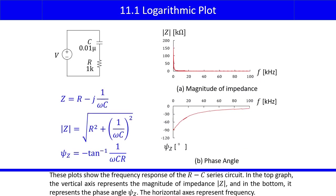These plots show the frequency response of the RC series circuit. In the top graph, the vertical axis represents the magnitude of impedance Z, and in the bottom, it represents the phase angle psi Z. The horizontal axes represent frequency.